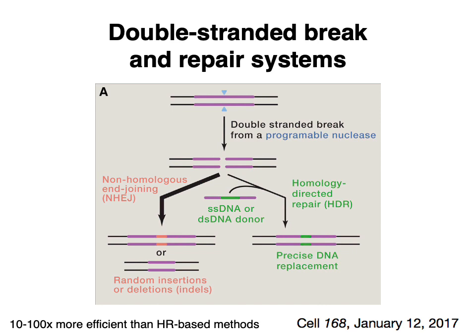The next methods, mainly CRISPR-Cas9, leverage the double-stranded break and repair systems in cells. The basic idea is that you introduce a double-stranded break in your genome using a programmable nuclease targeted to that region. After the break, one of two DNA repair pathways is used: non-homologous end-joining (NHEJ), which results in random insertions or deletions at the target locus, or if you supply a single-stranded or double-stranded DNA donor, homology-directed repair (HDR), which leads to very precise editing. Importantly, double-stranded DNA repair systems are 10 to 100 times more efficient than HR-based methods.